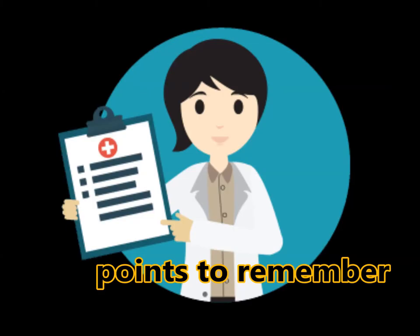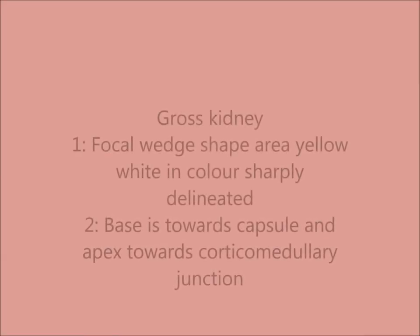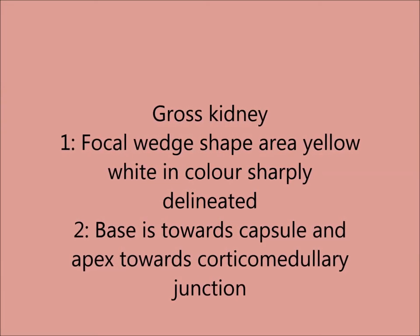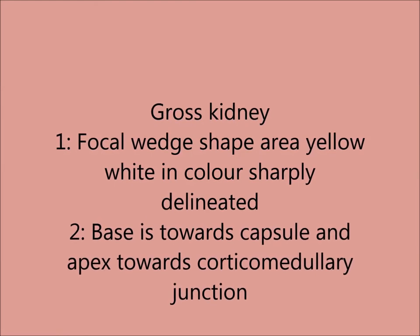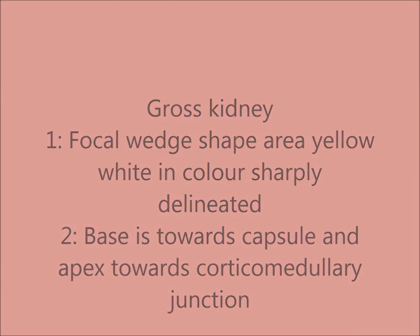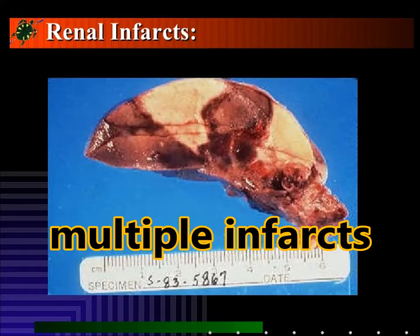On gross examination, the points of identification are: a focal wedge-shaped area, yellow-white in color, sharply delineated, with the base towards the capsule and apex towards the corticomedullary junction. The kidney may have multiple infarcts, but they all have the same wedge-shape configuration.